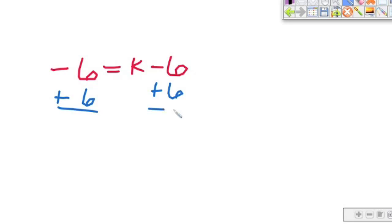What if we have some other negatives in here? What if we have something like this? Negative 6 equals k minus 6. We still want to get k by itself. So what's attached to the k? The negative 6 or the minus 6. So let's do the inverse. What's the inverse of minus 6? Add 6. So we're going to add 6 to both sides this time.